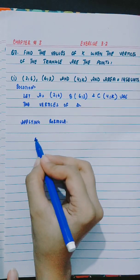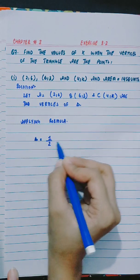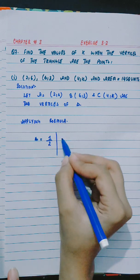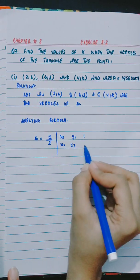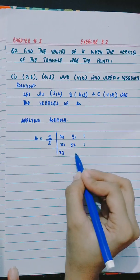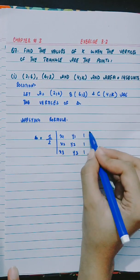Applying formula: Area is equal to half of the determinant with x1, y1, 1, x2, y2, 1, x3, y3, 1.